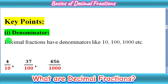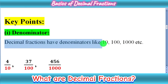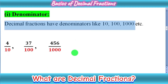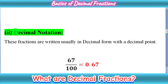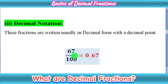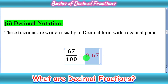Let's recall some key points. First: decimal fractions have denominators as ten, hundred, thousand, etc. Second is decimal notation — how to write decimal fractions or decimal numbers. These fractions are written usually in decimal form with a decimal point. As you can see, 67/100 is the rational form of a decimal fraction, and 0.67 is the decimal form of this number. How to construct it, we will discuss in detail in the next videos.